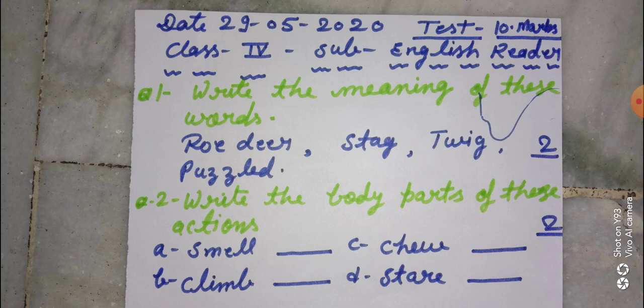Question number one: Write the meaning of these words. In words ki aapko meaning likhna hai - roedeer, stag, twig, and puzzled. Okay.